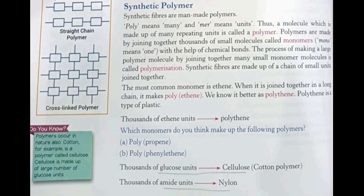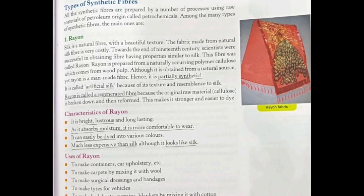The first synthetic fiber we'll study is rayon. Rayon was made as a substitute for silk, since silk was and still is quite costly. It is made with the help of cellulose or wood pulp. Because it is made from natural substances, it is called a semi-synthetic fiber. Its properties resemble silk - it is strong, absorbent, quite shiny in appearance, and does not melt on heating, though it may shrink or stretch.